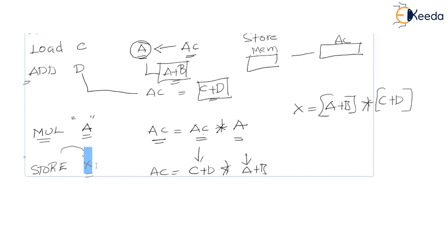In the next session, we will understand zero-address instructions. We have already seen three-address, two-address, and one-address. But what is zero-address? Without any operand, how is the instruction going to be executed? In order to perform one arithmetic operation, the minimum number of operands must always be equal to two. Even in the one-address instruction case, one is the accumulator and one more is specified within the instruction. How about zero-address instructions? Let us understand in the next session.